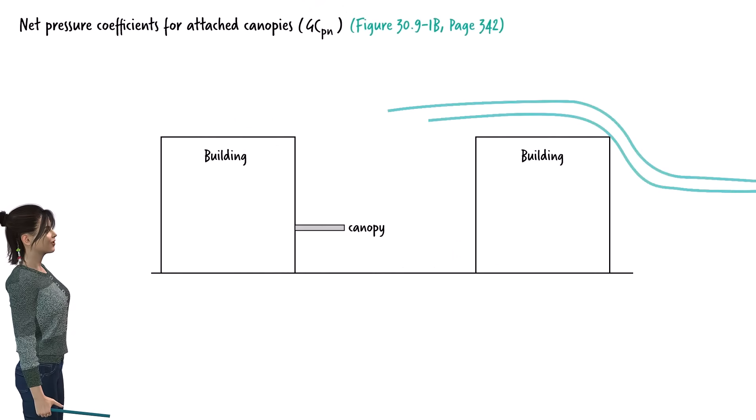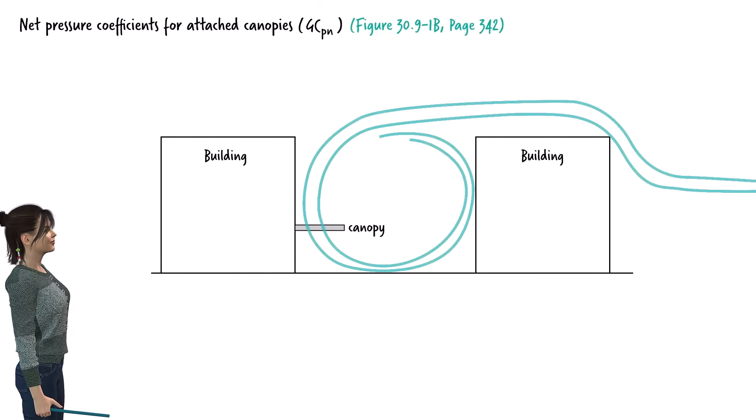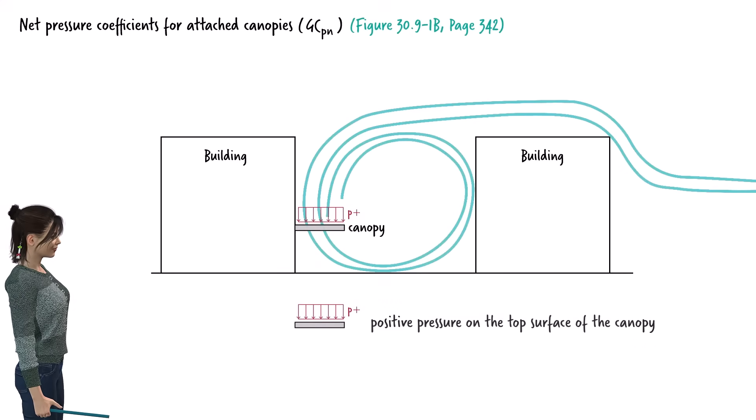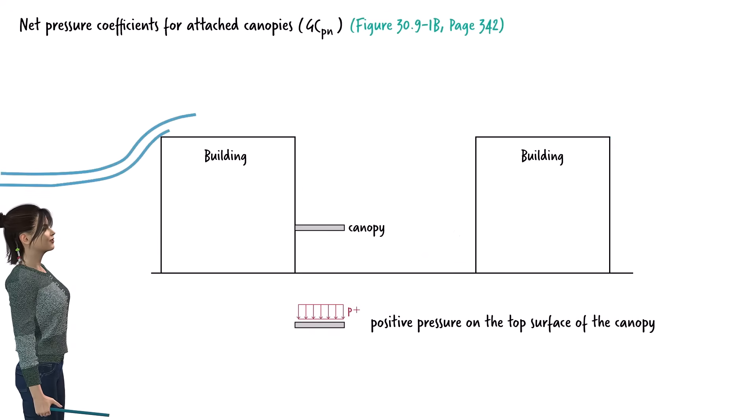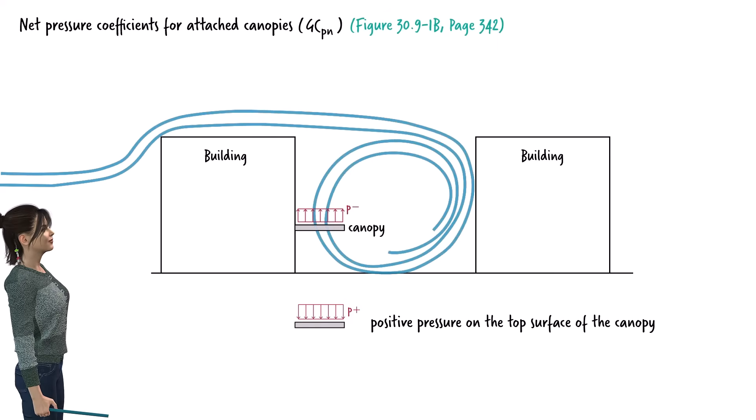Wind could push down on the top surface of the canopy, producing a positive pressure on that surface. A suction pressure could also be produced by wind on the top surface of the canopy. We refer to this as a negative pressure.